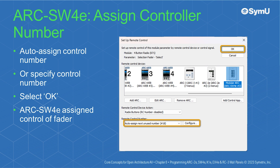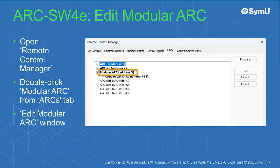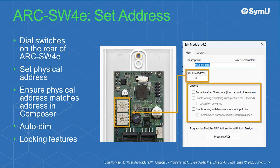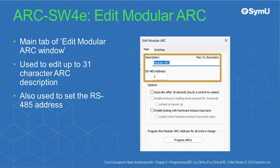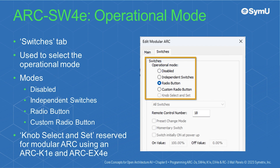The Arc SW4E has now been assigned control of the fader. Open Remote Control Manager and double-click Modular Arc from the Arc's tab to open the Edit Modular Arc window. Use the dial switches on the rear of the Arc SW4E to set the physical address, ensuring it matches the address in Composer. Auto-dim and locking features are also enabled from the main tab. The main tab is used to edit up to 31 characters of the Arc description and set the RS-485 address. The Switches tab is used to select the operational mode of the Arc SW4E.